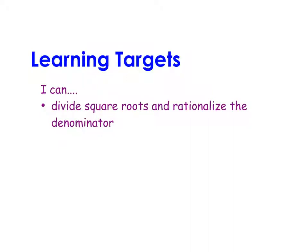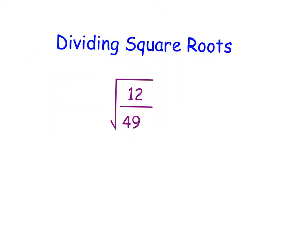In this video, we will be dividing square roots and then rationalizing the denominator when necessary. So when dividing square roots, most students have a pretty good gut instinct about what to do. And here you'll see we have the square root of 12 over 49.